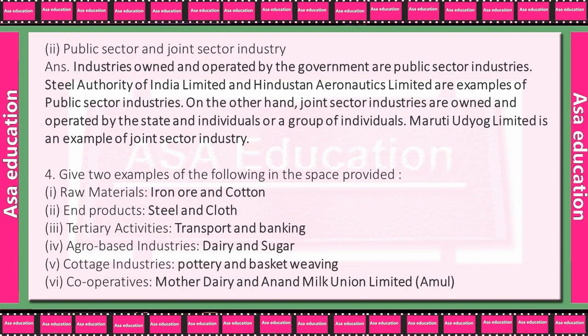Distinguish between public sector and joint sector industries. Industries owned and operated by the government are called public sector industries. Steel Authority of India Limited and Hindustan Aeronautics Limited are examples of public sector industries.